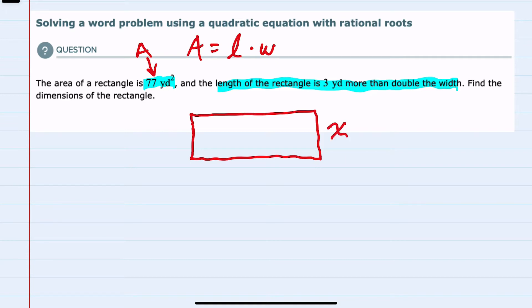And from this description we can see that the length is 3 yards more than double the width. And now that we have the area and the length and width expressed, we can use our formula where area is 77. The length, I'll write in parentheses to show multiplication, is 2x plus 3, and that's being multiplied by the width, which is x.